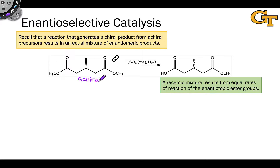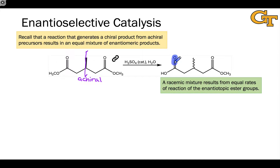The starting material contains a plane of symmetry that includes this methyl group coming out of the screen. The plane of symmetry is about here. But the product is chiral, and we can see that because one of the esters has been hydrolyzed — we've broken the symmetry. The group highlighted in blue is not identical to the ester group on the right; we have an acid on the left and an ester on the right.